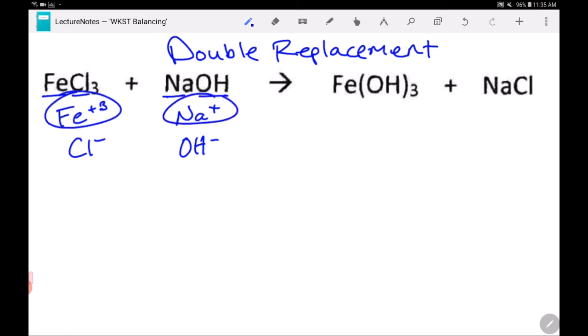Two cations, two anions. So in a single replacement reaction, the one we just saw, the two cations swapped places. We're going to do the same thing again. Now you can either swap the cations or you can swap the anions, doesn't matter. It's a double replacement reaction.